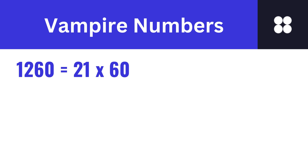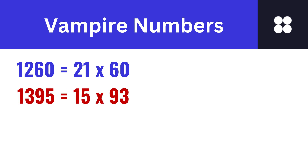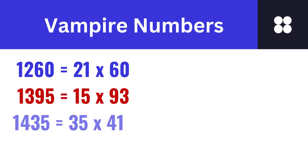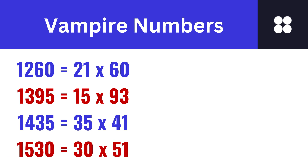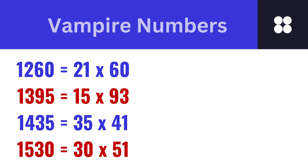The first few vampire numbers are: 1260, which can be expressed as 21 multiplied by 60; 1395, which can be expressed as 15 multiplied by 93; 1435, which can be expressed as 35 multiplied by 41; and 1530, which can be expressed as 30 multiplied by 51.